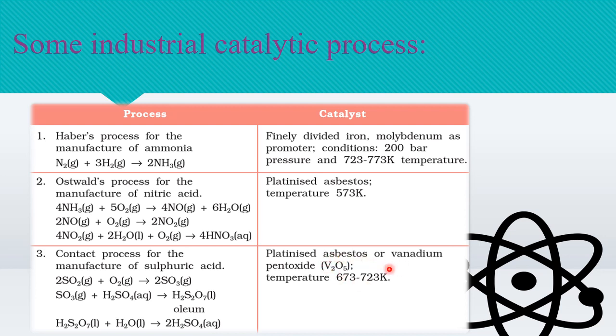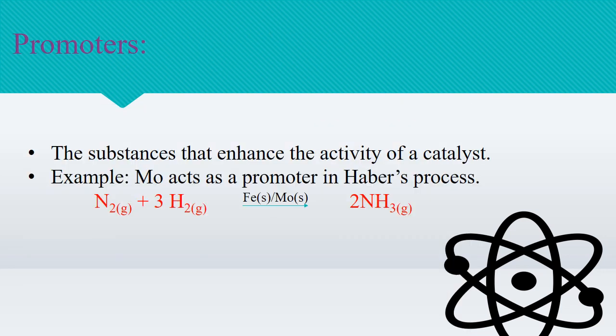The catalyst used in the contact process is either platinized asbestos or vanadium pentoxide, and the temperature is maintained. Promoters are substances that enhance the activity of a catalyst. For example, molybdenum acts as a promoter in the Haber's process.